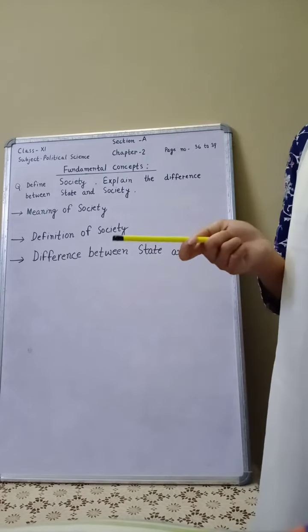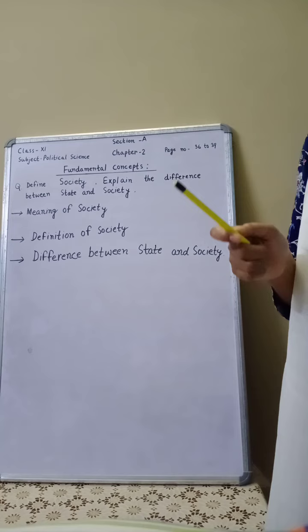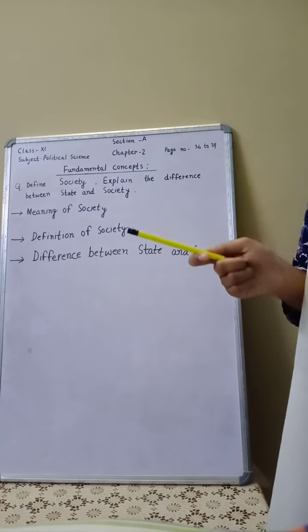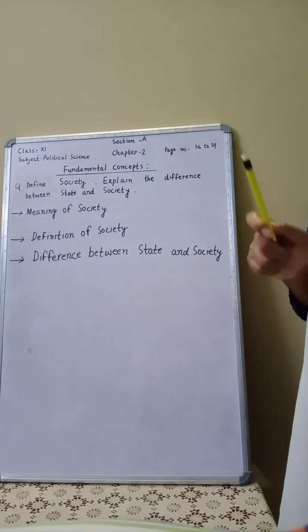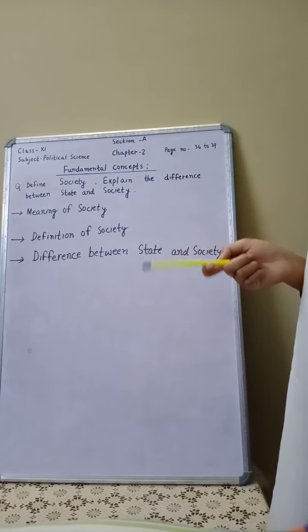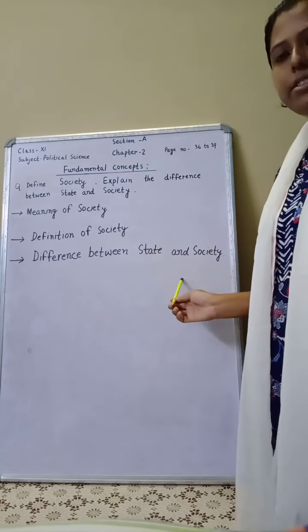Then sixth difference is, sociology studies society and politics or political science studies state. Thus, there are clear cut and identifiable differences between state and society.